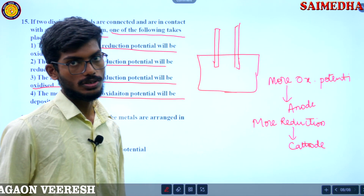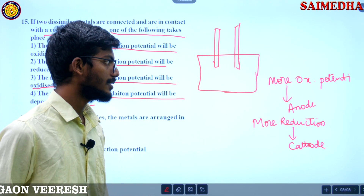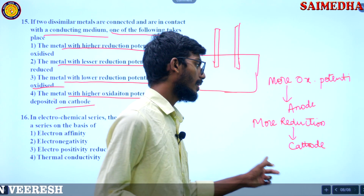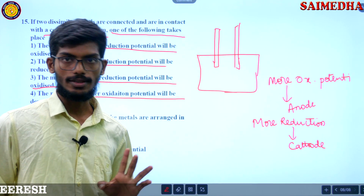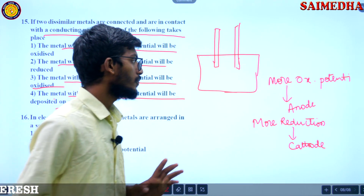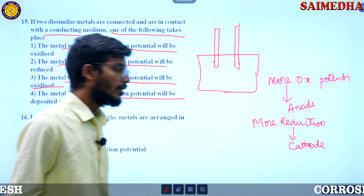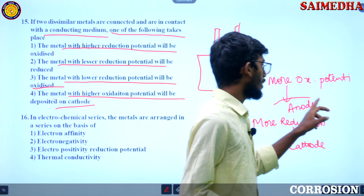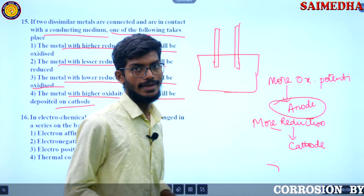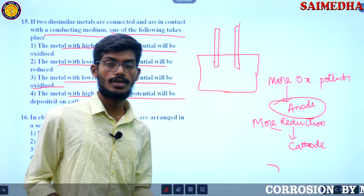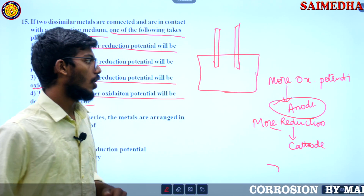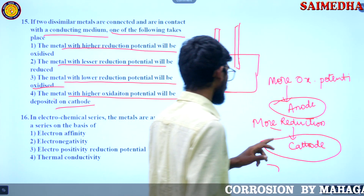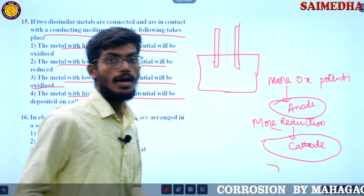The element with higher oxidation potential is the anode, and the element with higher reduction potential is the cathode. The anode undergoes oxidation, and the cathode undergoes reduction.